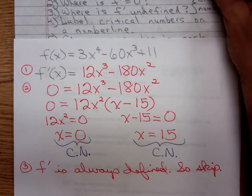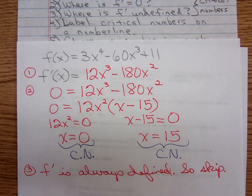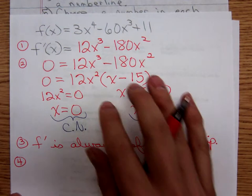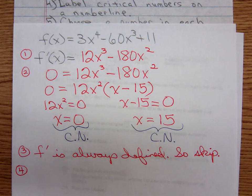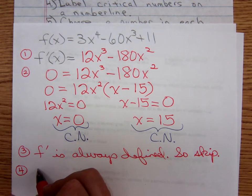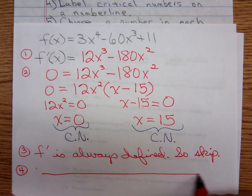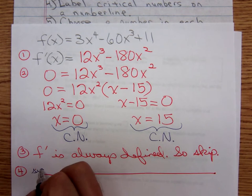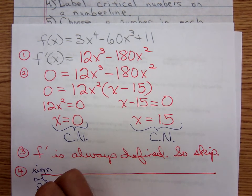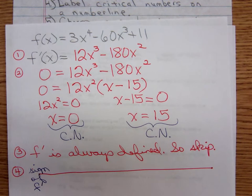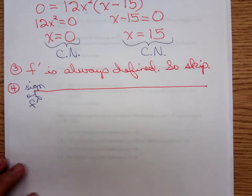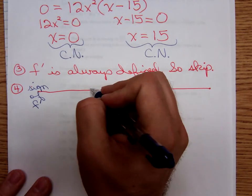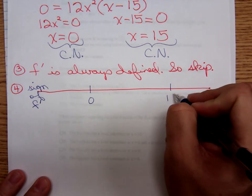Step number four: we label our critical numbers on a number line. There's my number line. We're looking at the sign of f prime — notice how I write that out on the side of the number line. We label our critical numbers: 0 and 15.